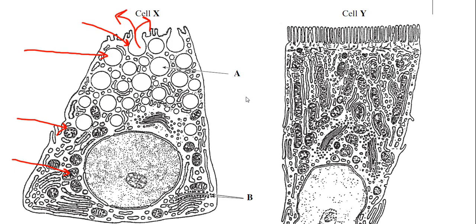So there's just some basic features of those two cells that allow you to interpret what kind of function they do. Just to remind you again, cell X is for secretion, cell Y is for absorption.